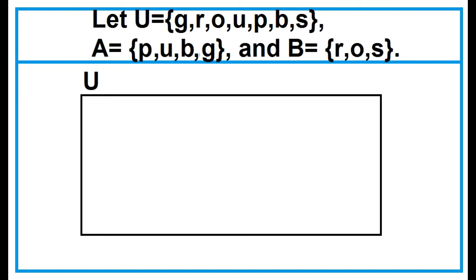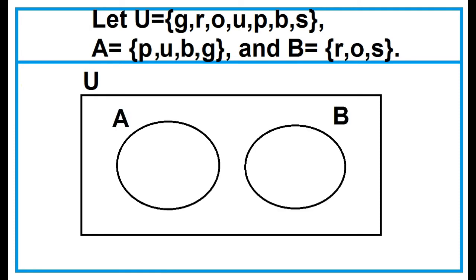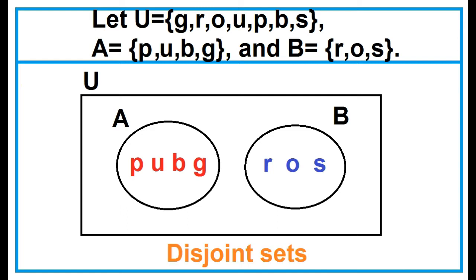Another example: Given set U, set A, and set B. Draw a rectangle and two circles inside the rectangle to represent the universal set, set A, and set B respectively. Place the elements of set A inside the circle for A and the elements of set B inside the circle for B. Note that sets A and B have no common element — we call these sets disjoint sets.